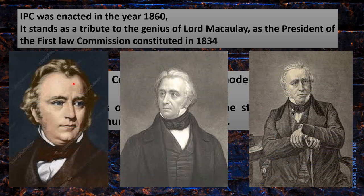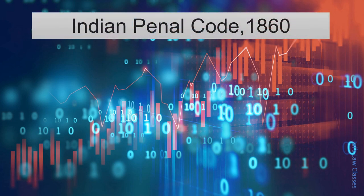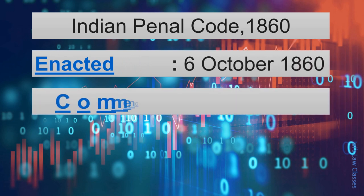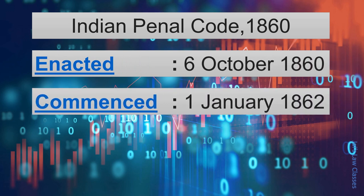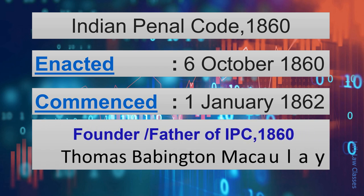The Indian Penal Code 1860 is a role model in the matter of certainty. During 160 years of its existence on the statute book, it has undergone the least number of amendments. The IPC was enacted on 6th October 1860 and commenced on 1st January 1862. The founder, or father, of IPC 1860 is Thomas Babington Macaulay — in short, Lord Macaulay.